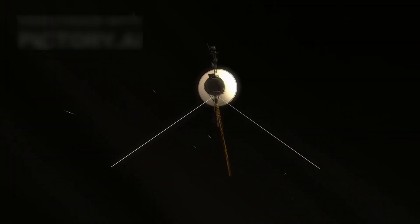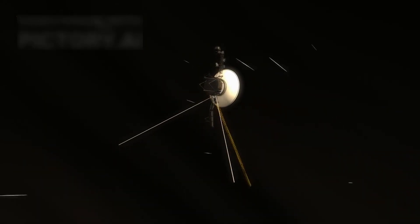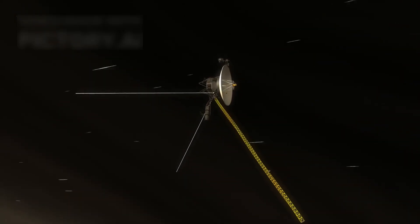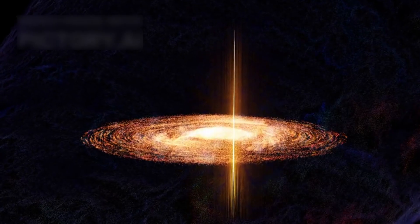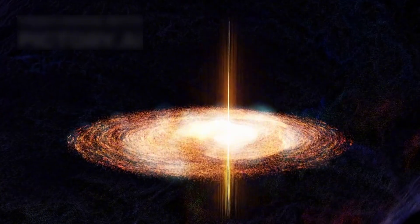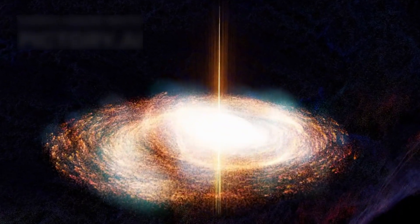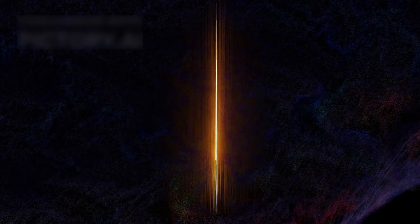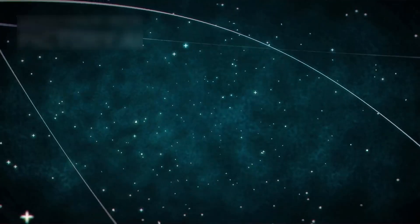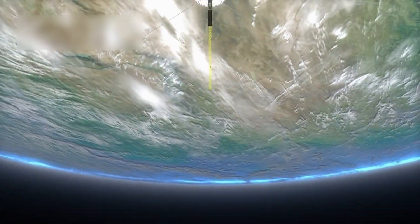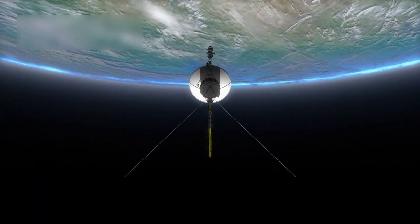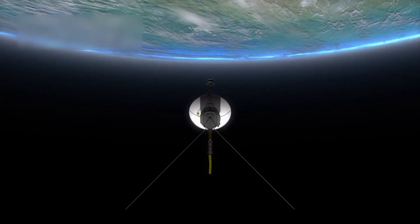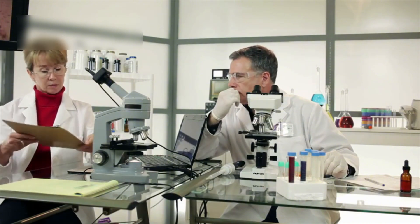Voyager 1 eventually crossed into interstellar space, beyond a boundary called the heliopause, where the Sun's influence gives way to the galaxy's. Initially thought to be about 50 astronomical units from the Sun, Voyager 1 crossed this invisible line on August 25, 2012. But the transition wasn't as expected. Scientists had predicted a sudden magnetic shift, but Voyager's readings showed that the magnetic field direction stayed nearly the same. This unexpected result puzzled researchers.